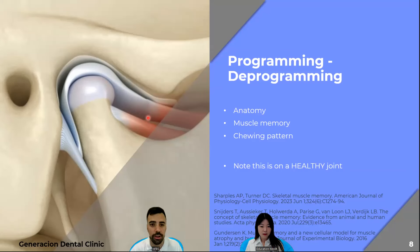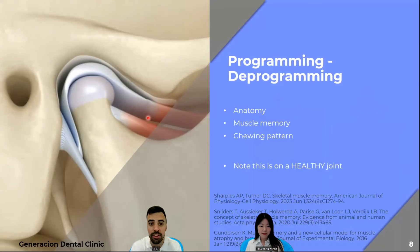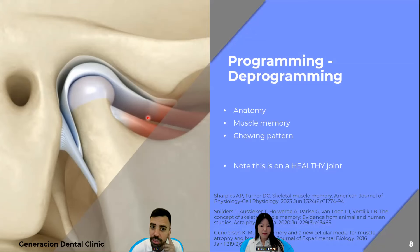Patients have muscle memory — when they try to bite in their normal position, their brain always directs them to the same position where they used to bite. We don't really know if they're in the right position because they're used to it. Teeth are going to dictate where the joints are going to be: if the teeth are forward, the joint needs to be forward. The only way to know if joints are healthy is no sharp pain or tension in the joints.